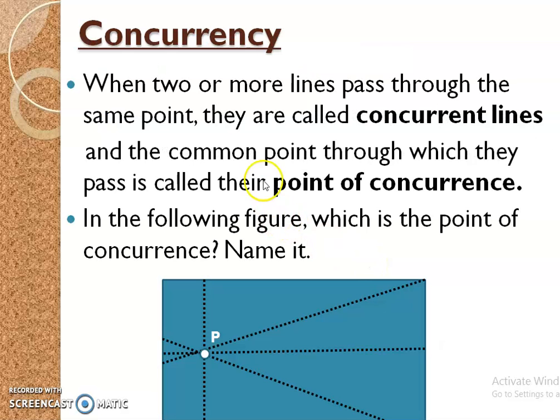Concurrency: When two or more lines pass through the same point, they are called concurrent lines. And the common point through which they pass is called their point of concurrence. Here, point P is the point of concurrence and these lines are concurrent lines.